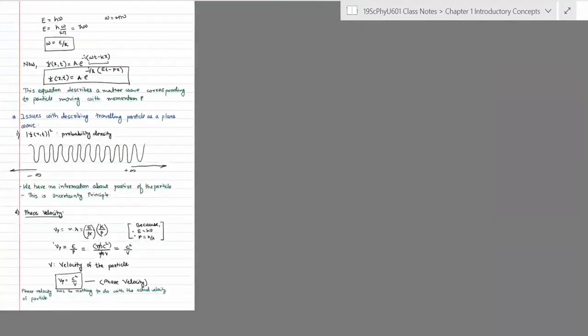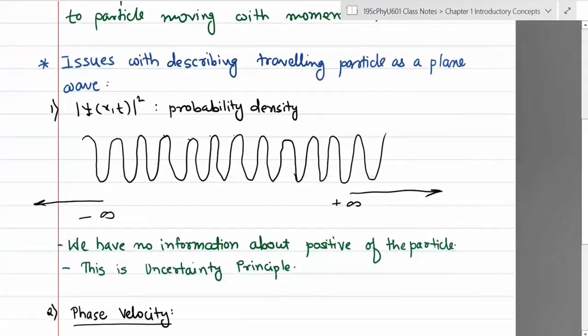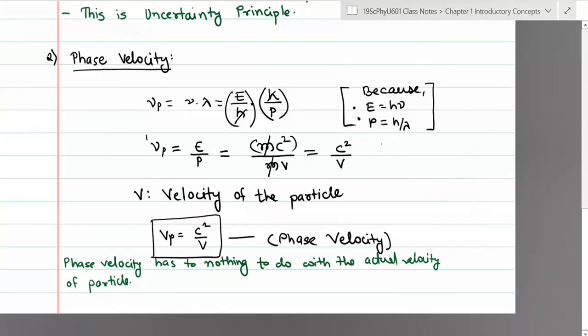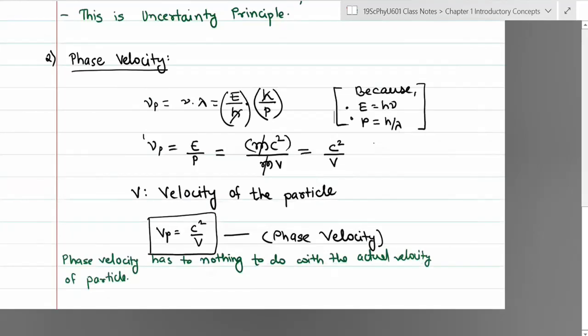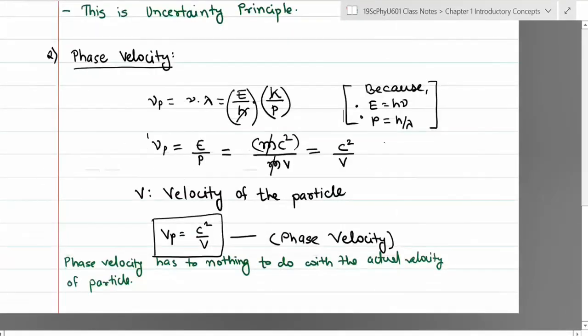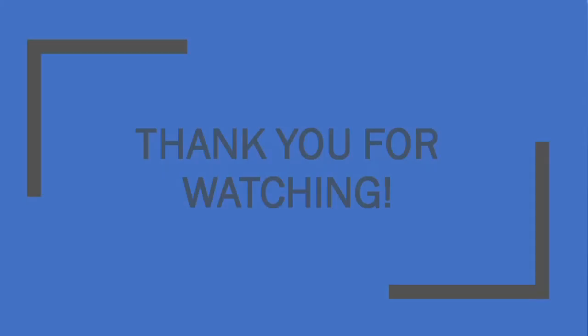So these are the two issues with representing a particle as a plane wave. If you measure momentum correctly you can describe the particle as a plane wave, but then you have no idea about the position of the particle, and the phase velocity doesn't correspond to the actual motion. The solution is to start mixing waves.